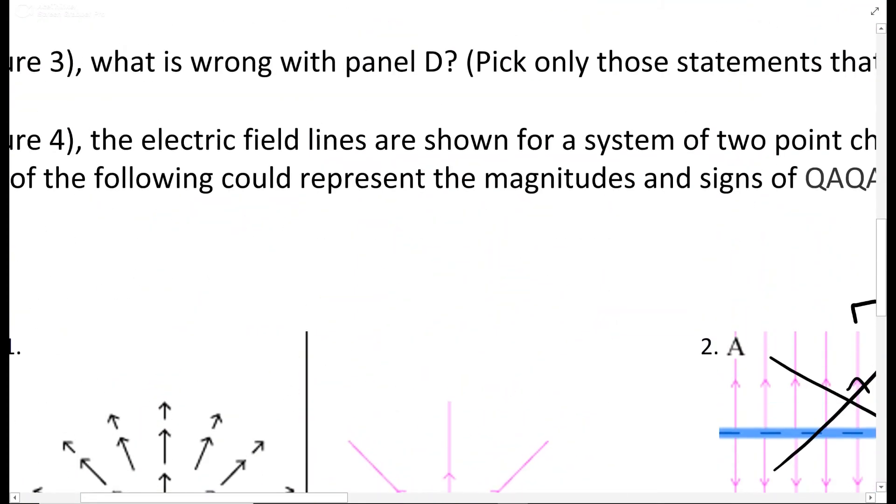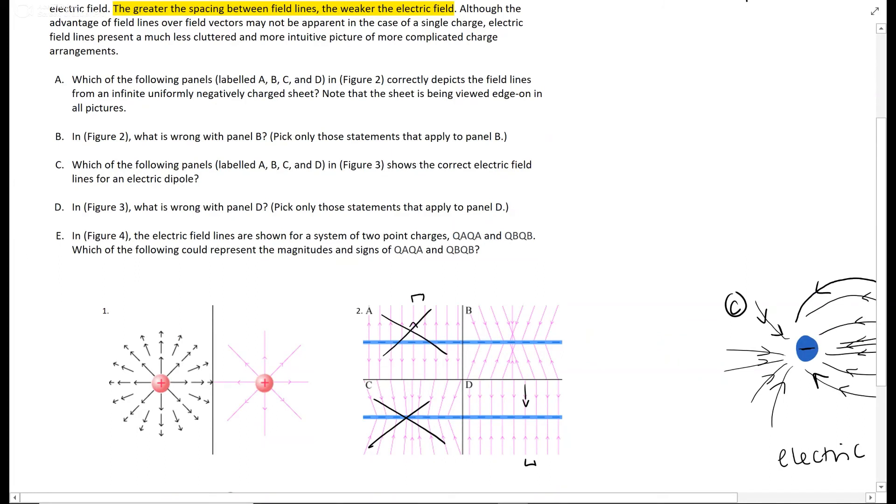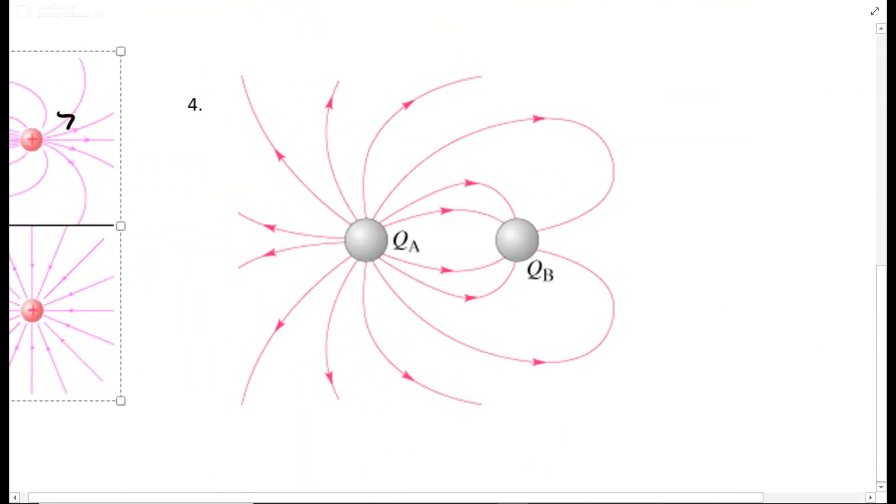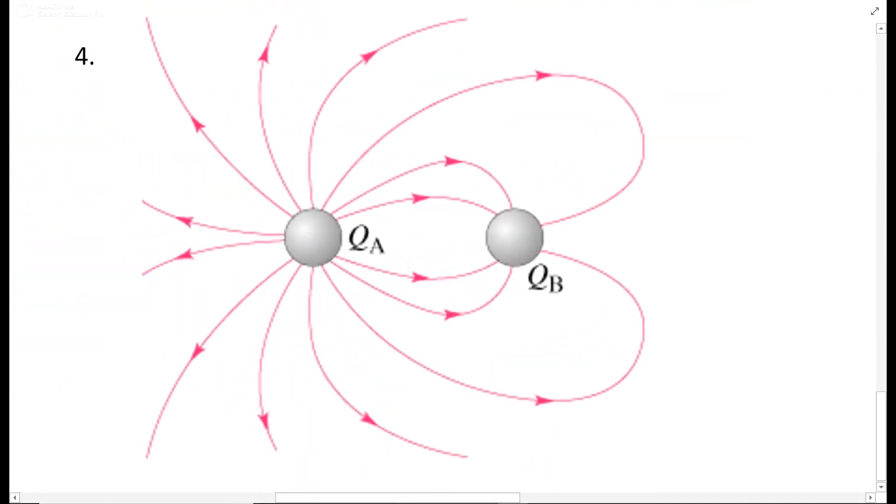And then the last question: electric field lines are shown in figure 4 for two point charges, and which of the following could represent the magnitudes for these two charges? You can see that field lines are going away from A and going towards B, which automatically gives us the assumption that A is positive and B is negative. So then the question is, what is the charge specifically? Is A bigger or is B bigger? And the answer is A is bigger. As you can see, the field lines get really big and spread out over here, but stay pretty close near B.